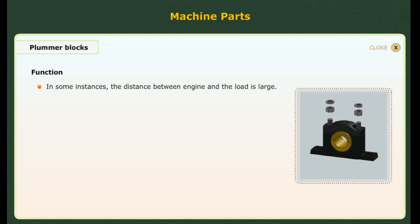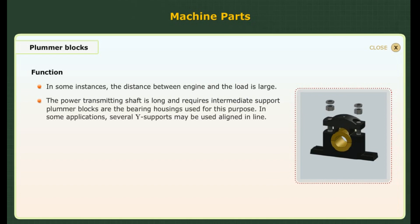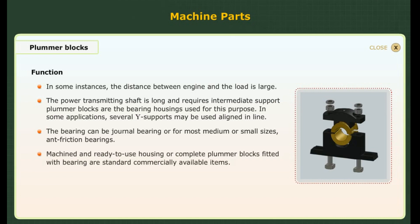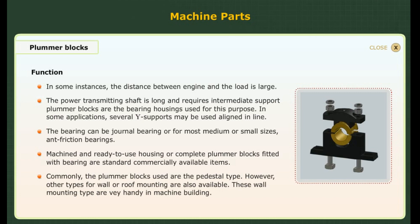In some instances, the distance between the engine and the load is large. The power transmitting shaft is long and requires intermediate support. Plumber blocks are the bearing housings used for this purpose. In some applications, several shaft supports may be used, aligned in line. The bearing could be a journal bearing or, for most medium or small sizes, friction bearings. Machined and ready-to-use housings — complete plumber blocks fitted with the bearing — are standard commercially available items. Commonly, the plumber blocks used are the pedestal type; however, other types for wall or roof mounting are also available. These wall mounting types are very handy in machine building.